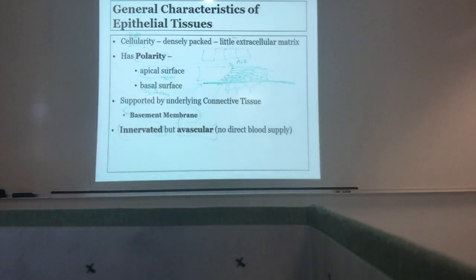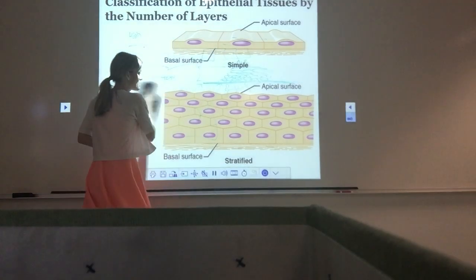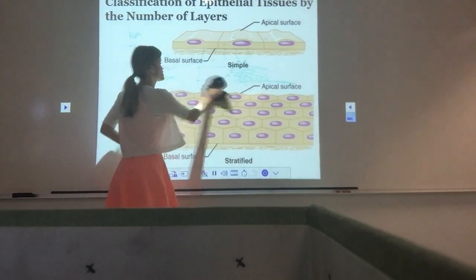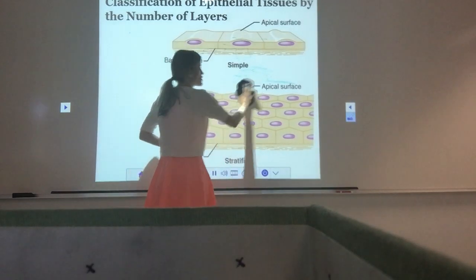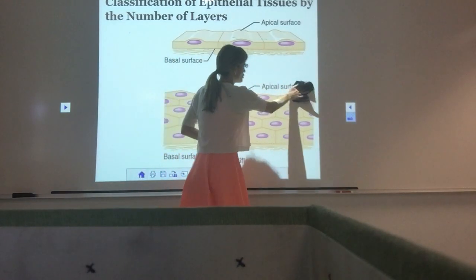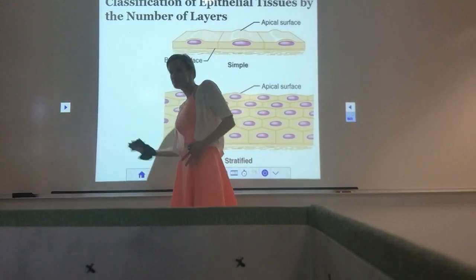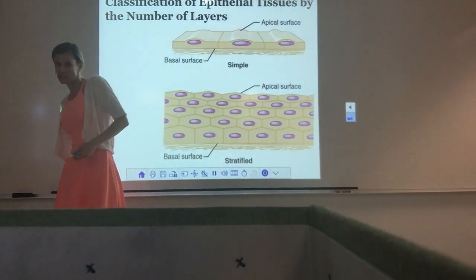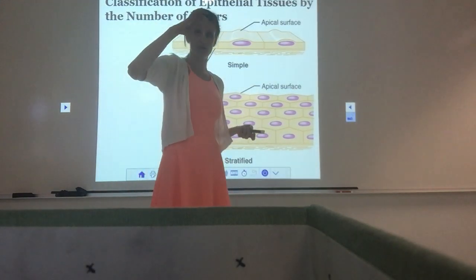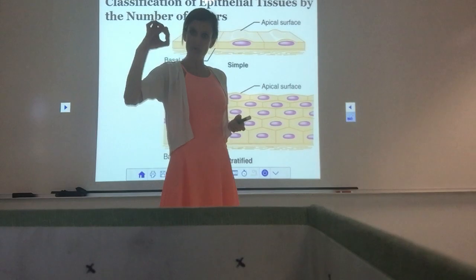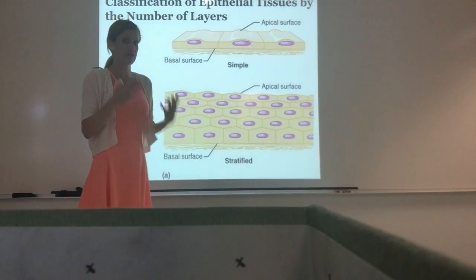When we name epithelial tissue, we name it based on how many layers of cells there are and what the shape of the cells is. When you're looking at a picture of tissue, the first thing you want to do is figure out: is it epithelial or connective tissue? If you see an open area — a big white blank space or a perfect white circle like a lumen — it's epithelial tissue. You have to see open space.